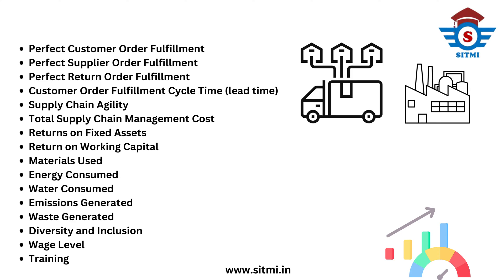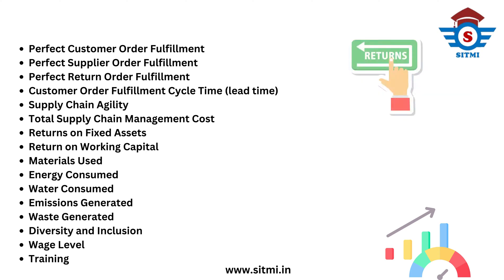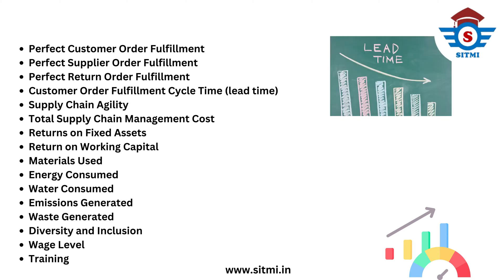The second KPI is perfect supplier order fulfillment, which measures supplier performance. The third is perfect return order fulfillment, which is from a customer or supplier point of view and talks about how the returned material has been fulfilled.